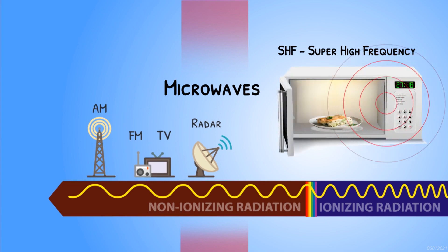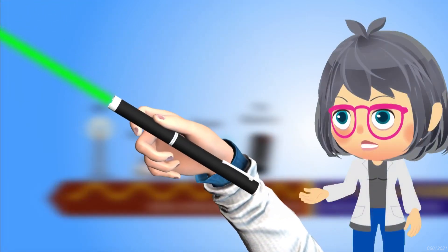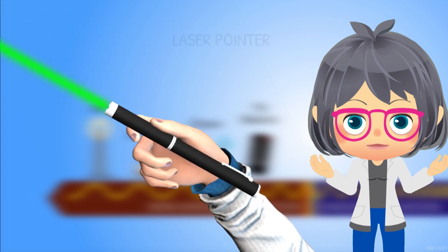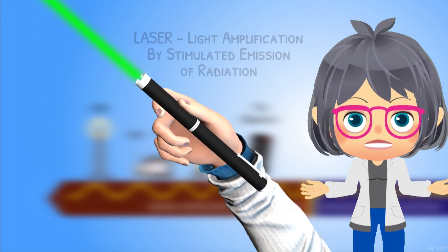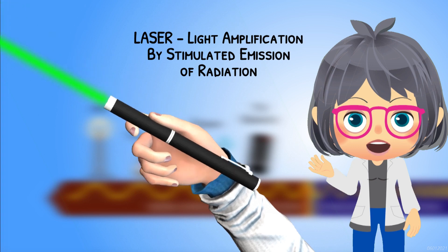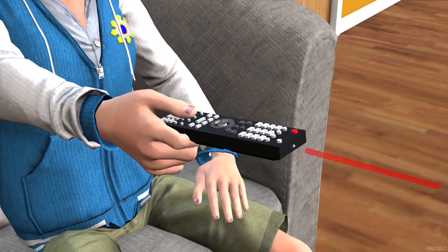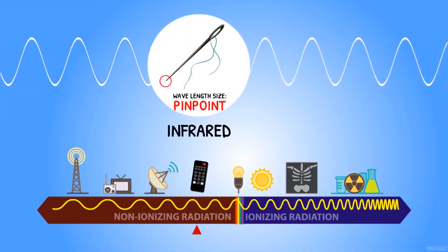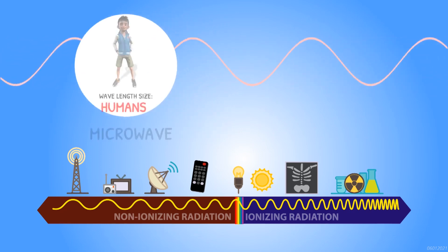Microwaves excite molecules producing heat energy to cook food very quickly. This is a laser — it is a kind of radiation. Laser stands for Light Amplification by Stimulated Emission of Radiation. Did you know that your remote control also uses radiation to change your TV channels? Remote controls that have infrared technology use infrared light — a kind of electromagnetic radiation that can only work for short distances because of its shorter wavelengths.